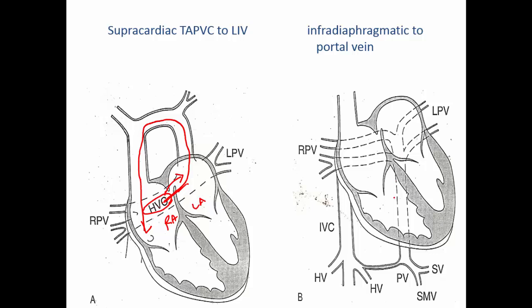In the infradiaphragmatic type, all four veins join through a long vertical vein going all the way down, joining the portal vein. Because it's quite a narrow system, it's very likely to be obstructed, giving rise to back pressure on the lung — and these infants can be very sick. Life depends on the level of obstruction; if severe the infant will be very sick. It comes back into the right atria via the inferior vena cava, then through the patent foramen ovale — if no adequate PFO the infant is in real danger.